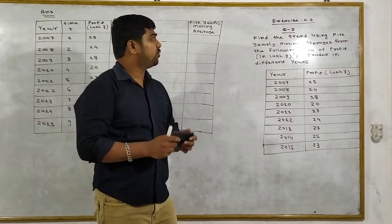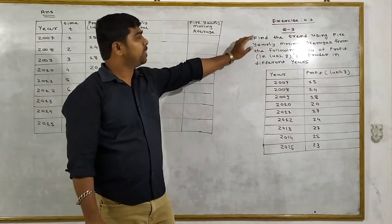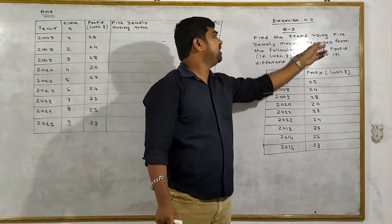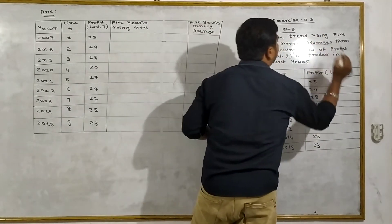Hello Friends, Exercise 4.3 Question No.3. Find the trend using 5 yearly moving average method from the following data.